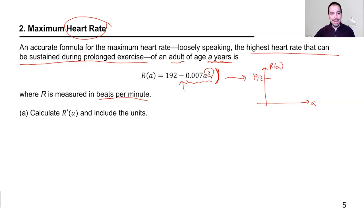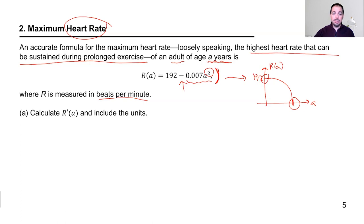This is a downward-opening quadratic, so there's some age at which the model predicts heart rate is zero — which doesn't make sense physically. This is what happens in mathematical modeling: the model breaks down at the extremities. It's meant to apply for adults, roughly from age 15 to perhaps 70 or 80.